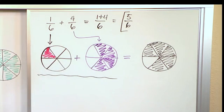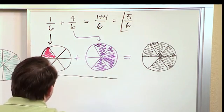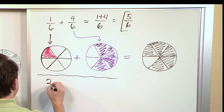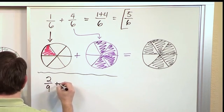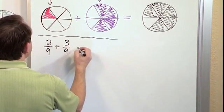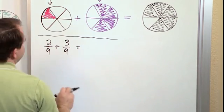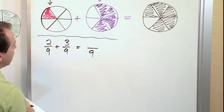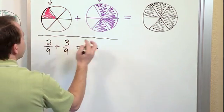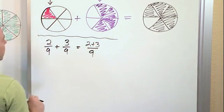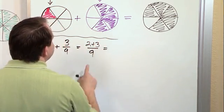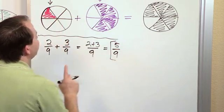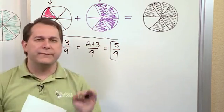Let's get some practice. We have two-ninths plus three-ninths. The first thing we check is: are the denominators equal? They already are. So in our answer we just keep a nine, then we take the numerators and add them together: two plus three is five. So the answer is five-ninths. Any time you solve a fraction problem and get an answer, you have to check whether it's in simplest form — also called lowest terms or fully simplified.